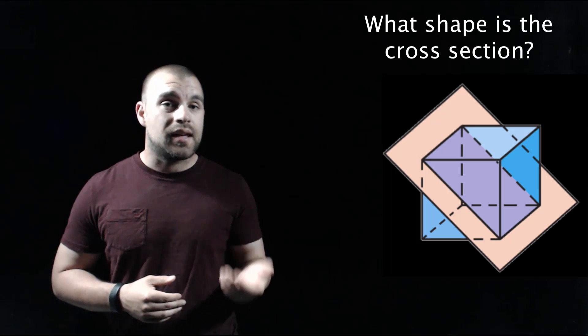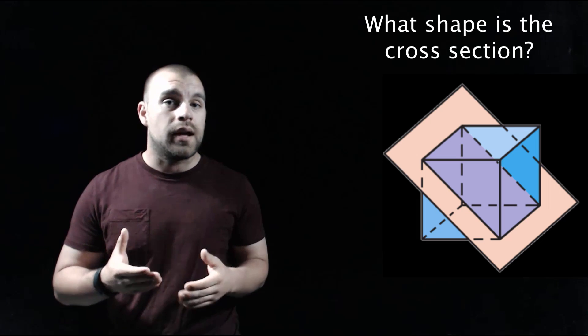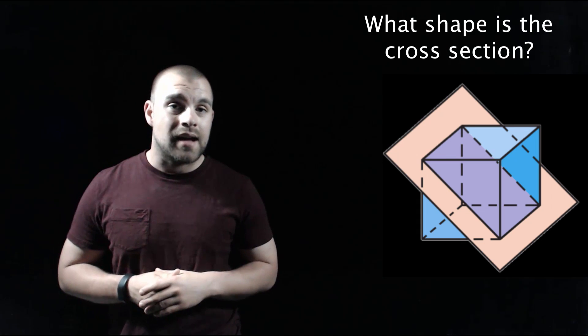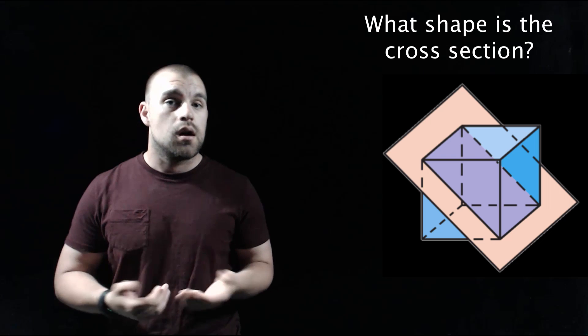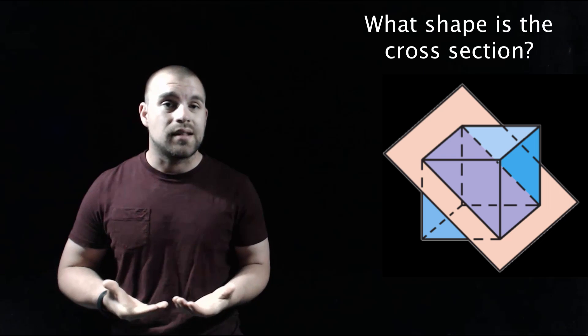For our second example we've still got that cube but now our plane is intersecting it at a diagonal going through some of the vertices of our cube. This cross section is going to be a rectangle.